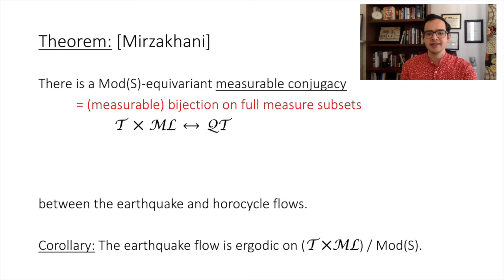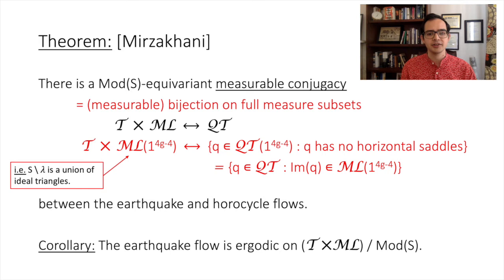Measurable conjugacy means Mirzakhani demonstrated a measurable bijection between two full-measure subsets which takes earthquake flow to horocycle flow. Specifically, on the hyperbolic side she restricted to maximal measured laminations — those which cut the surface into ideal triangles — and on the flat side, she considered quadratic differentials with only simple zeros and without horizontal saddle connections. Both subsets are generic with respect to the natural Lebesgue-class measures, giving the measurable conjugacy. Of course, there are many measured laminations which aren't maximal. We saw at the beginning that for a fixed pants decomposition we can conjugate between hyperbolic and flat twisting, and we'd like to explain this in the framework of Mirzakhani's conjugacy.